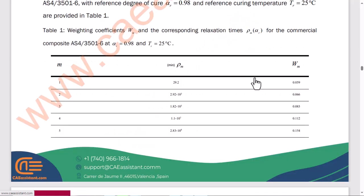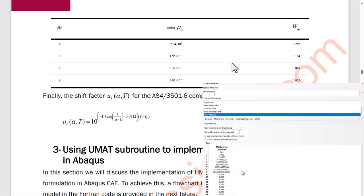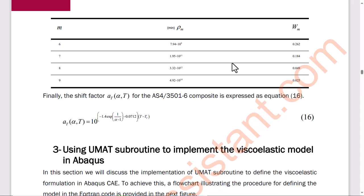Moreover, the weighting coefficients and the corresponding relaxation times for the commercial composite, AS4-3501-6, at the reference temperature and degree of cure are reported in the following figure. We have defined them in Abaqus in the form of mechanical constants. Finally, the shift factor, AT, for the AS4-3501-6 composite is expressed in Equation 16.